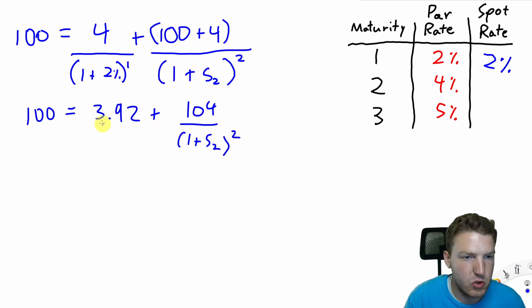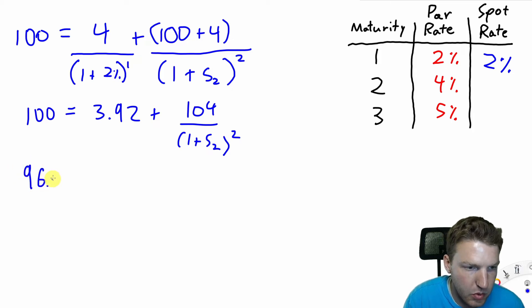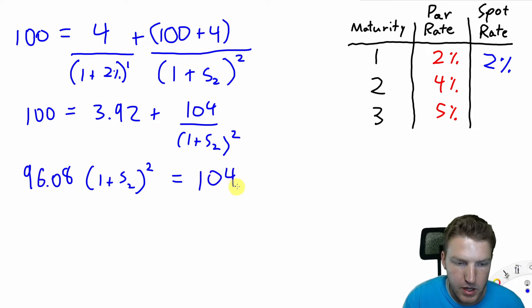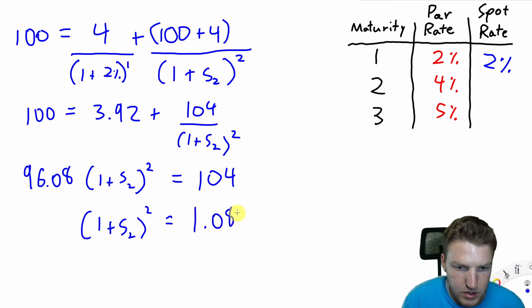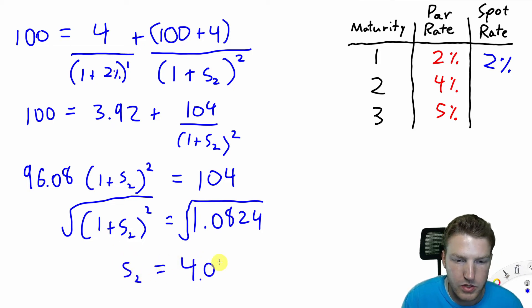Now we just solve for the formula. 100 equals 4 divided by 1.02, which is 3.92, plus 104 over 1 plus S2 squared. We subtract 3.92 from both sides, giving us 96.08 times 1 plus S2 squared equals 104. Dividing both sides by 96.08, we get 1 plus S2 squared equals 1.0824. Taking the square root of both sides and subtracting 1, we find that S2, the spot rate for two years, is equal to 4.04%.